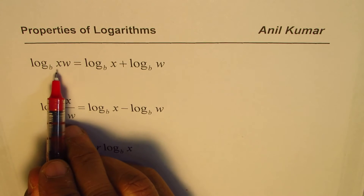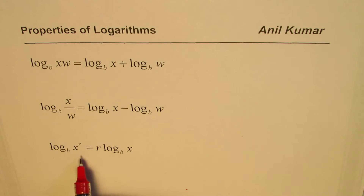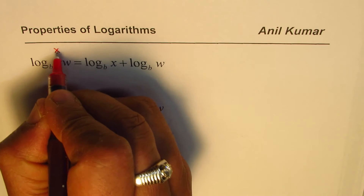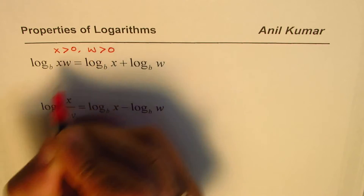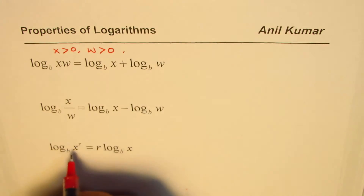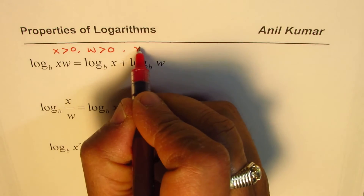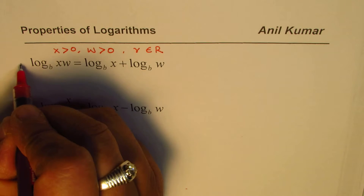You should remember there are restrictions on logarithms. In these properties, we require X greater than 0 and W greater than 0, otherwise the logarithmic function will not be defined. R, which appears in the power property, belongs to the set of real numbers. These are the restrictions on these properties.